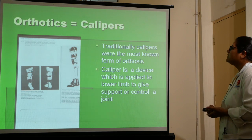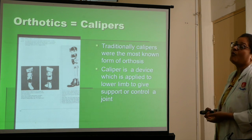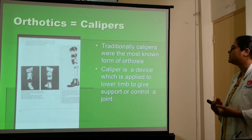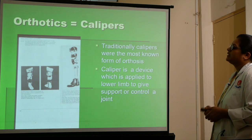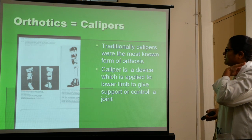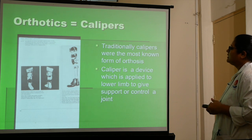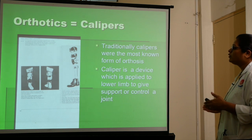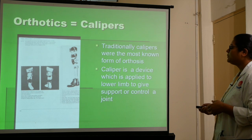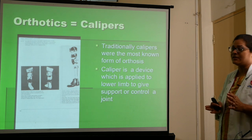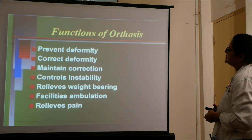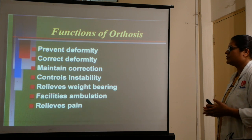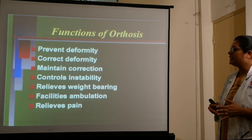Calipers — traditionally, calipers were the most well-known form of orthosis. A caliper is a device which is applied to the lower limb to give support or control a joint. As you are viewing in the picture, a caliper helps the weak limb part to move and supports it to control joint movement and muscle function.